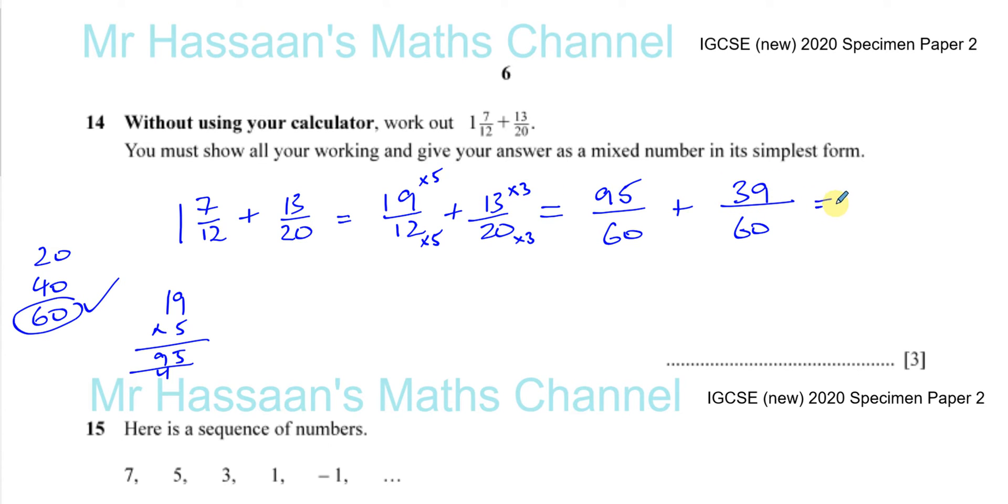Now we can add these two together. So you have 95 plus 39 - that gives you 14 here, and 9 plus 3 which is 12, plus 1 is 13. So that's 134 divided by 60.